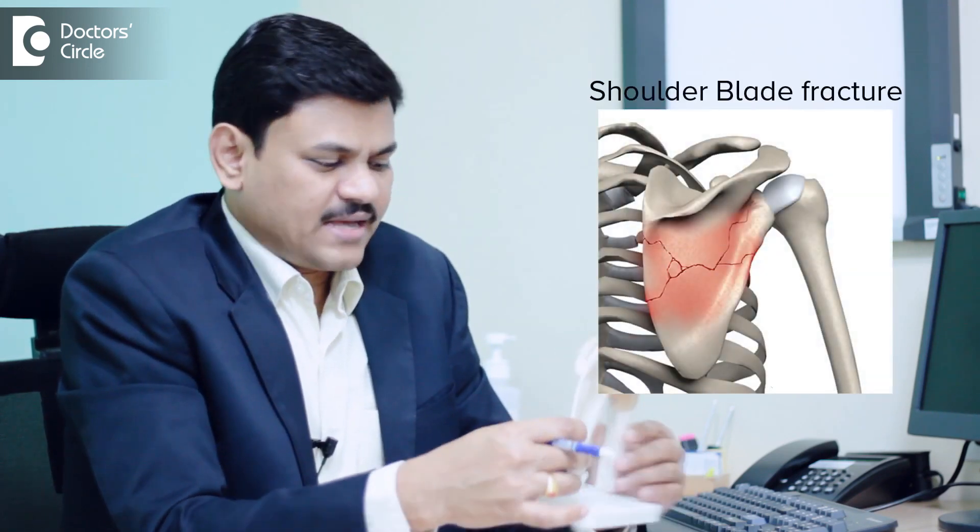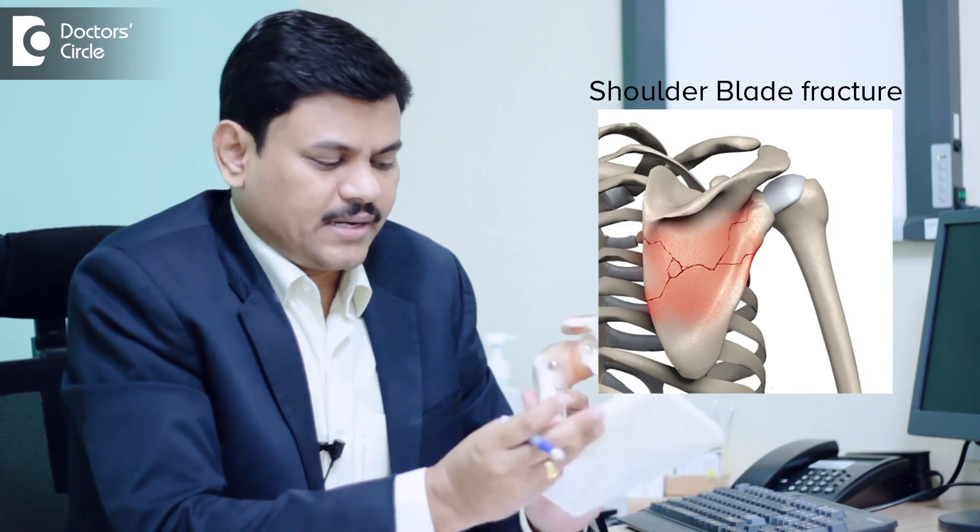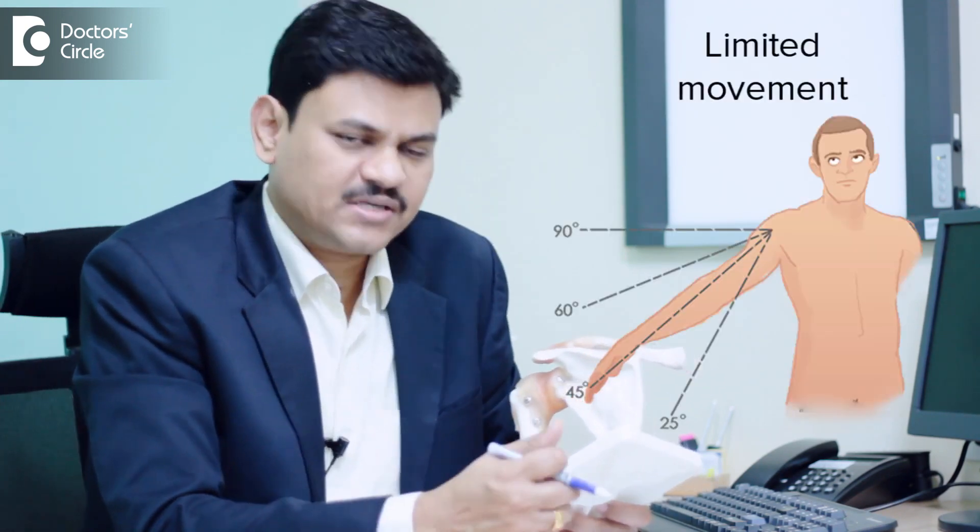Shoulder blade fractures are not uncommon but they many times go unrecognized or are left untreated. The shoulder blade provides attachment to many important muscles surrounding the shoulder joint which give function to the joint. If the shoulder blade is broken it tends to displace in different directions because of the muscles attached to it. If not reduced into normal position there can be limitation of movements, stiffness of the shoulder joint, or the strength of these muscles will come down.